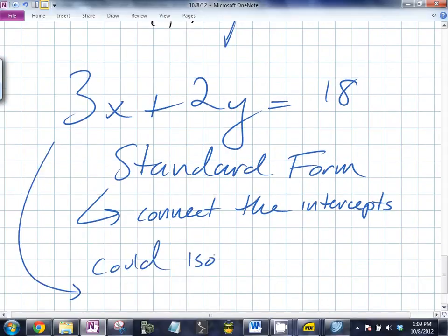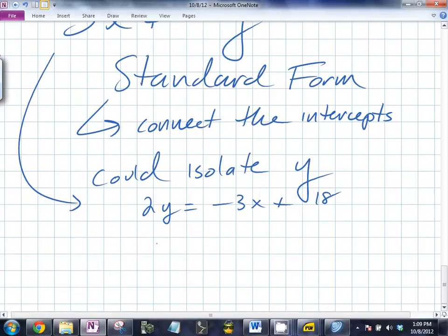And that would be 2Y is equal to negative 3X plus 18. Now what do I divide both sides by? 2. So Y equals negative 3 over 2X plus 9. Would you get the same graph? Yes. You should. If you don't, then something went wrong because they're both the same statement just written differently. It depends on what, yeah, I really like point-slope form.